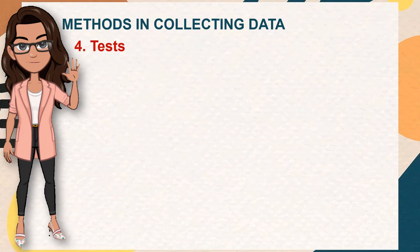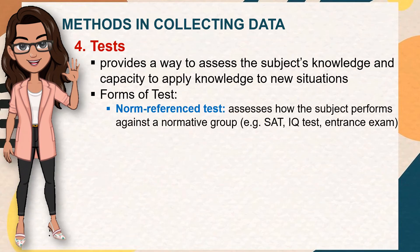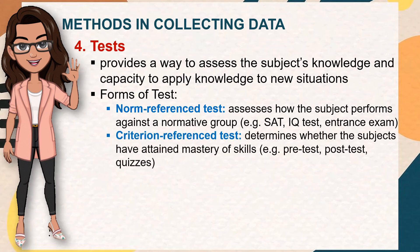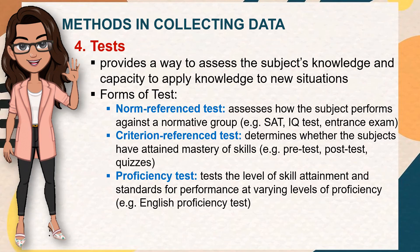The fourth method in collecting data is the test, which provides a way to assess subjects' knowledge and capacity to apply knowledge to new situations. Forms of test include: norm-referenced test, which provides information on how the subject performs against a normative group — for example, SAT, IQ test, and entrance exams; criterion-referenced test, which determines whether subjects have attained mastery of skills — for example, pre-tests, post-tests, and quizzes; and proficiency test, which assesses the level of skill attainment — for example, the English proficiency test.